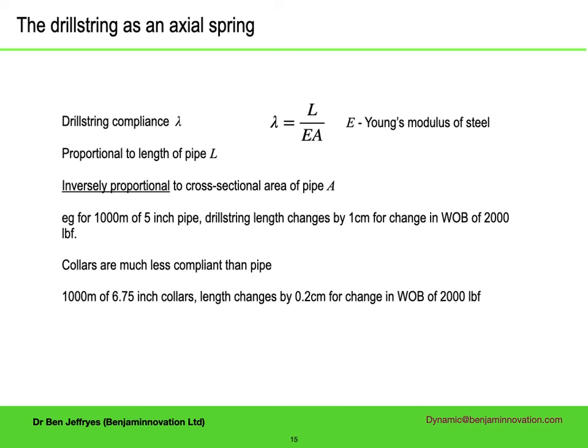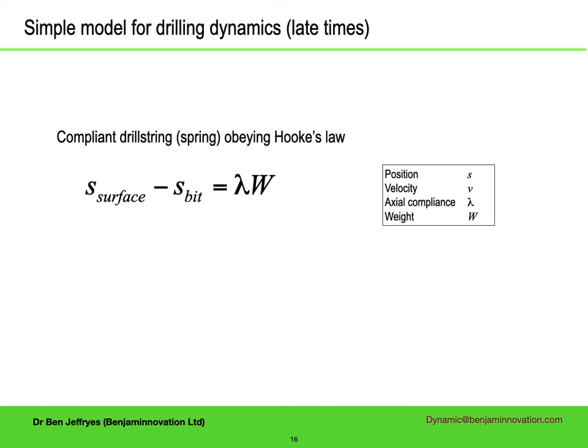The collars are much less compliant than pipe. For 1 km of 6¾-inch collars, for each 2000 pounds of weight on bit, they would contract by only 2 mm. As weight is applied over these longer timescales, the drill string gets shorter — Hooke's law. When we are drilling, what is important is not position but velocity. We can differentiate Hooke's law to get that the difference between the surface velocity (the speed the top of the drill string is being lowered) and the bit velocity (the speed the drill bit is drilling) is proportional to the rate of change of the weight on bit. This model assumes that the difference between the surface hook load and the bottom-hole weight does not change with time, which for rotating drilling with a stand of pipe is a good approximation.